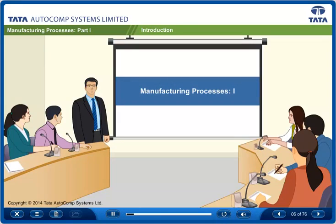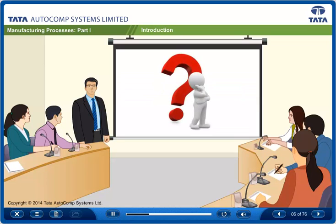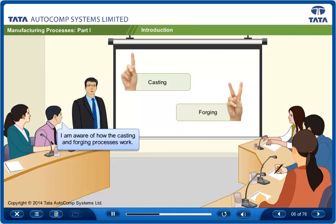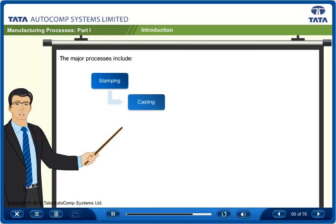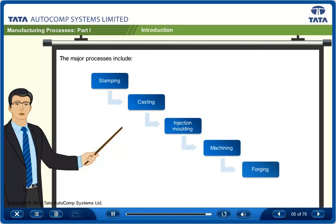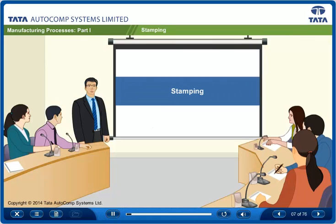Welcome everyone. Let's understand some of the different manufacturing processes used to produce products. The major processes are stamping, casting, injection molding, machining, and forging. We will discuss each one of them in detail in this session.